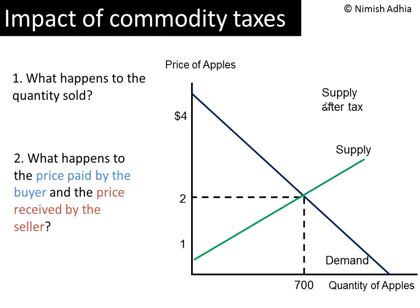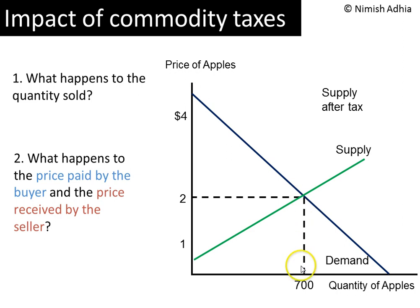Suppose this is the market for apples. This is the demand and supply. The equilibrium quantity is 700 apples and the equilibrium price is $2.